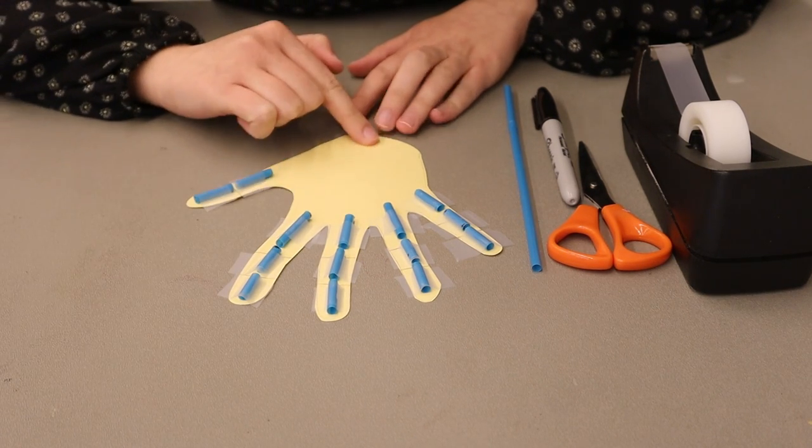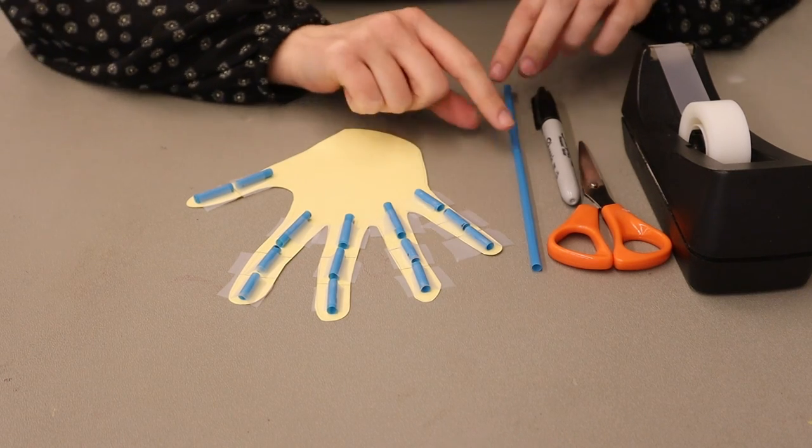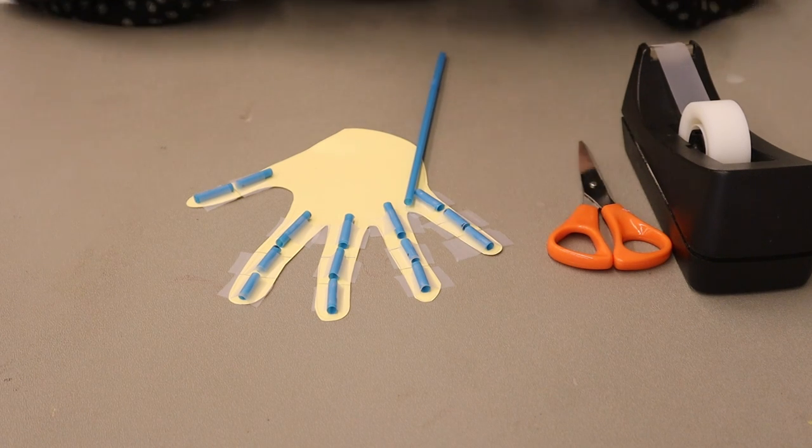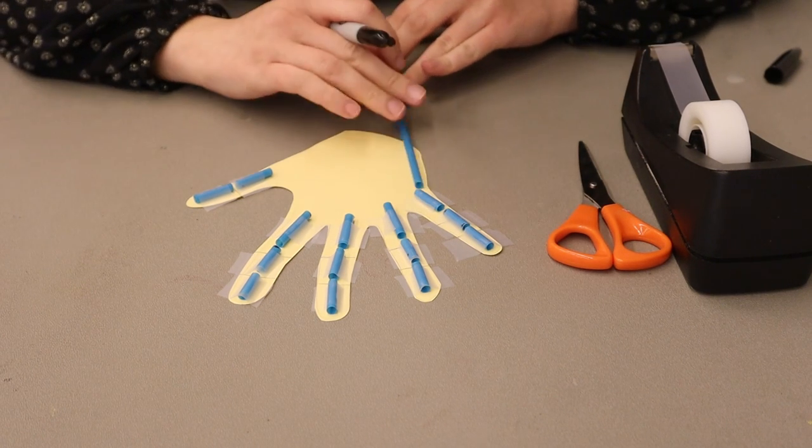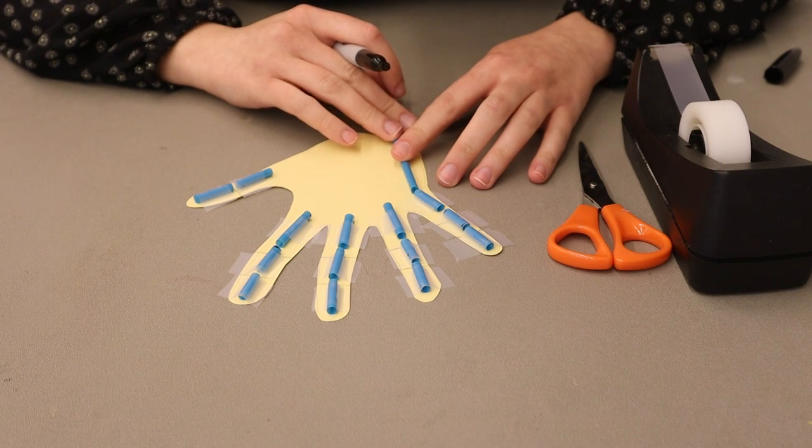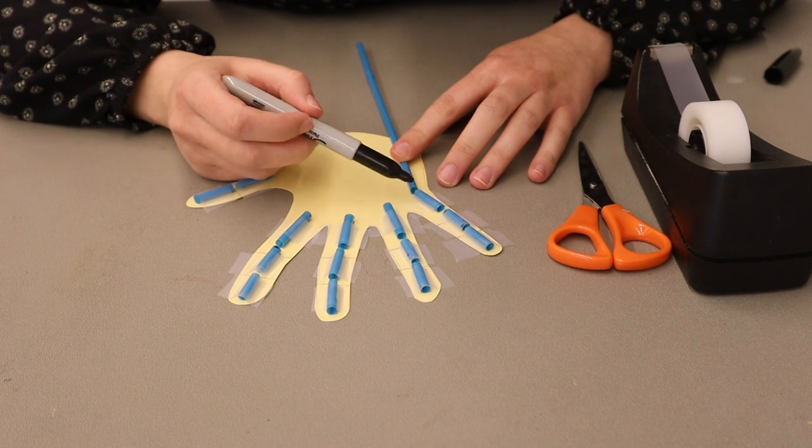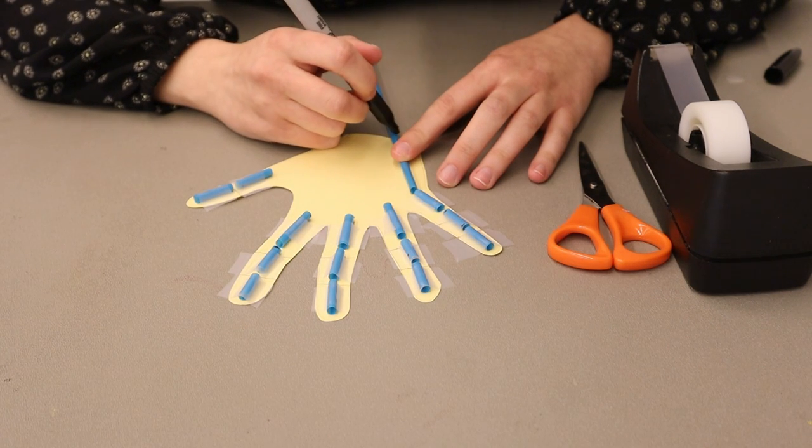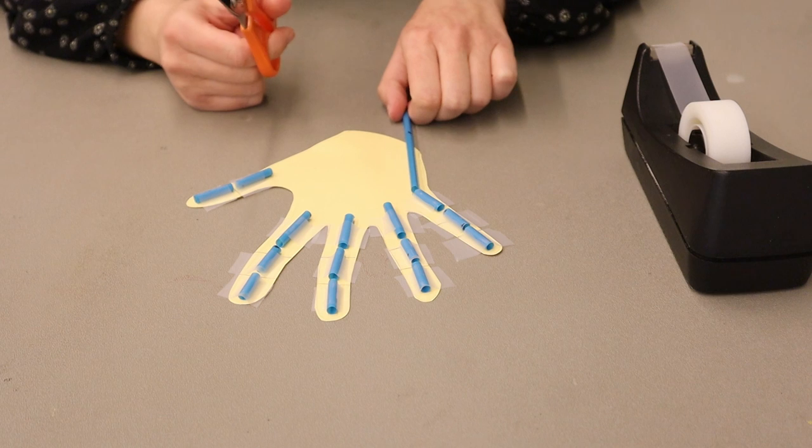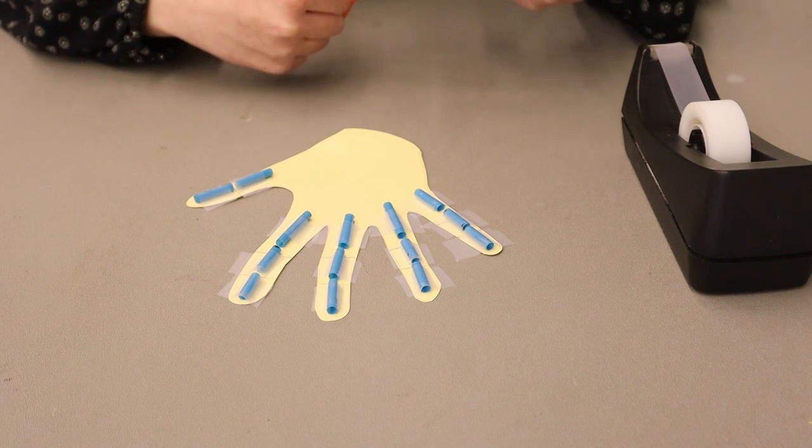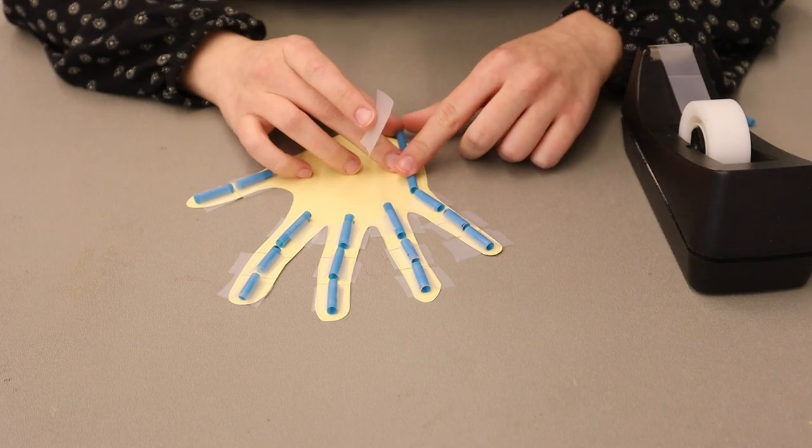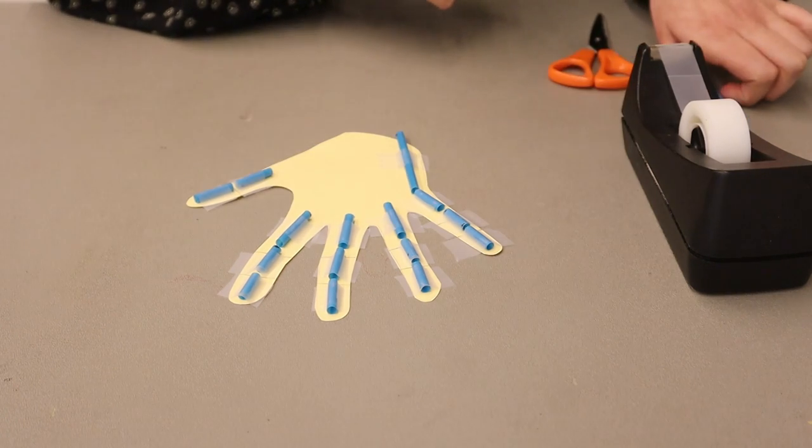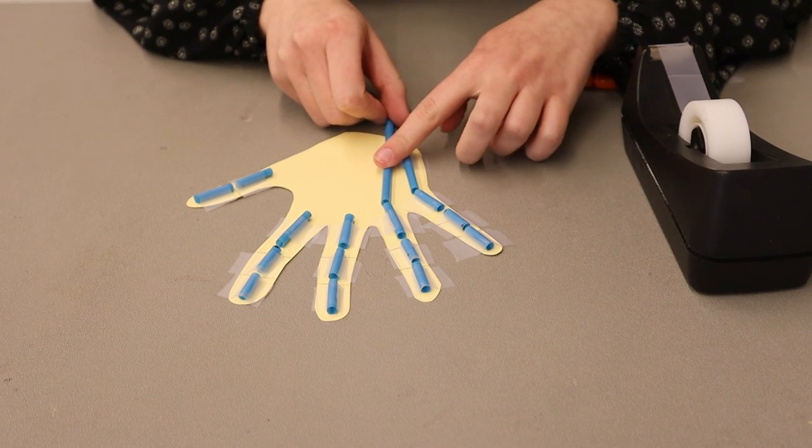Now we need to create the long bones that are found in our palm. Again, we are going to use our straw, our black marker, scissors, and tape. We are going to measure our straw so it's not touching the last bone in our finger, and we are going to mark it here, right at the bottom of the palm. We are now going to cut out the straw, just like we did before. We are going to tape the straw to the palm, and we are going to repeat the process for all of our fingers.